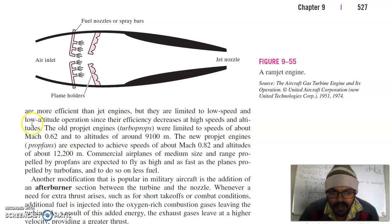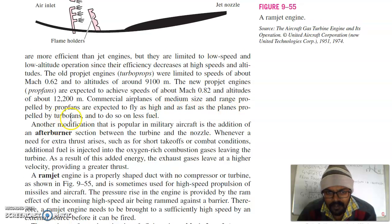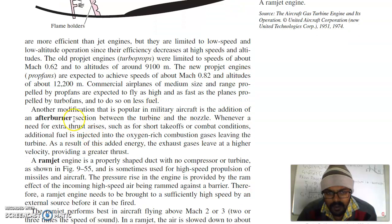General rule: propellers are more efficient than jet engines, but they are limited to low speed and low altitude operations since their efficiency decreases at high speed and altitudes. The old prop jet engines were limited to speeds of about Mach 0.62 and altitude of around 9,100 meter. The new prop jet engines are expected to achieve speeds of about Mach 0.82 and altitude of about 12,200 meter. Commercial airplanes of medium size and range propelled by prop fans are expected to fly as high and fast as planes propelled by turbofans and to do so on less fuel.